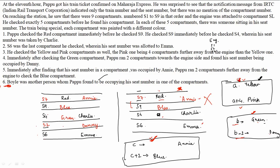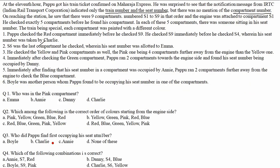With yellow at position A and pink at A+4, and Boyle as the remaining person, yellow must be present at S2 and pink at S6 — but wait, S6 has Emma. Resolving this, the final table is: Pappu first checked S7 (red, Any), then S9 (blue), then S4 (green, Charlie), then S2 (yellow, Danny), then S6 (pink, Emma). After that he found his own seat.